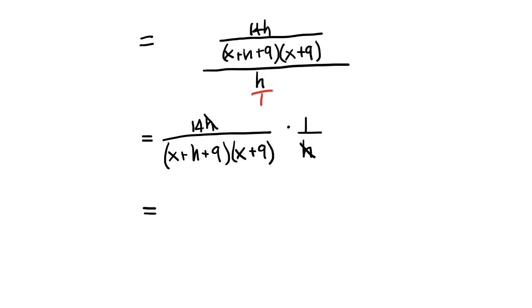So I'm going to end up with 14 over x plus h plus 9, all multiplied by x plus 9. So that simplifies down quite a bit.